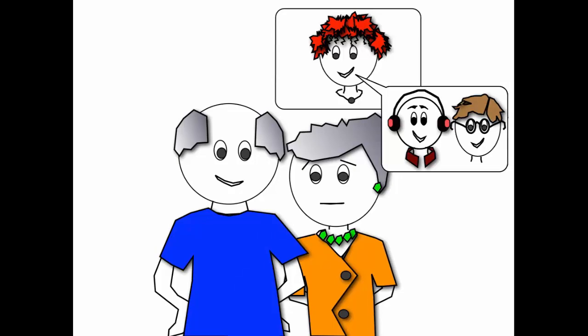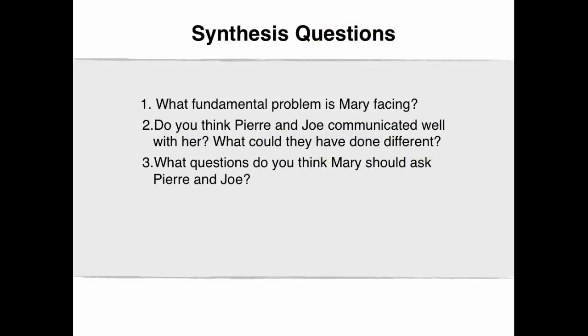The synthesis questions for this video are as follows. What fundamental problem is Mary facing? Do you think Pierre and Joe communicated well with her? What could they have done different? And finally, what questions do you think Mary should ask Pierre and Joe?